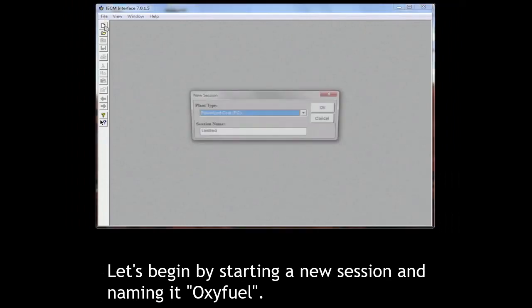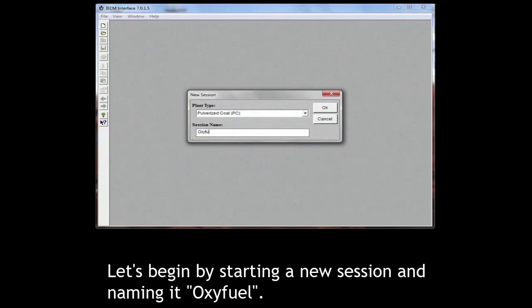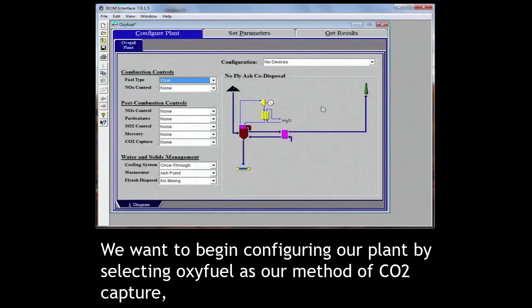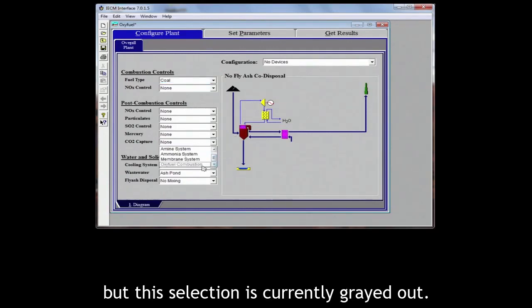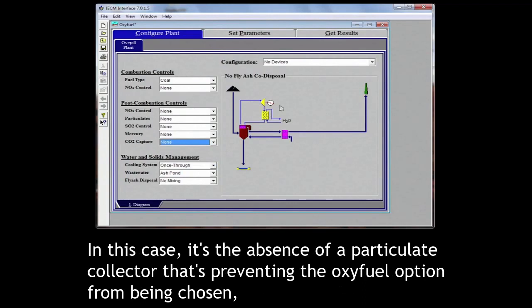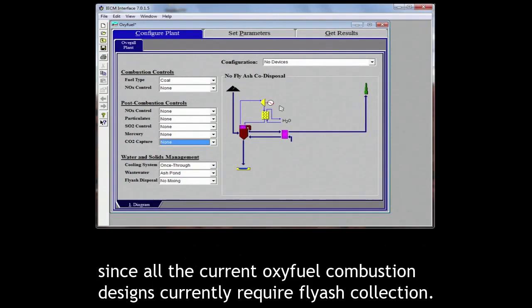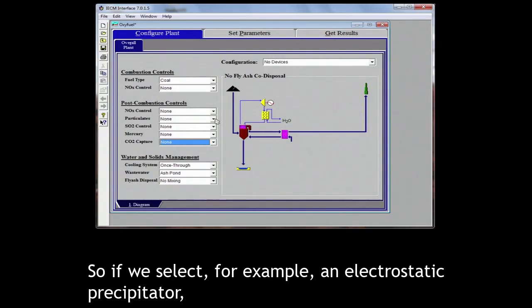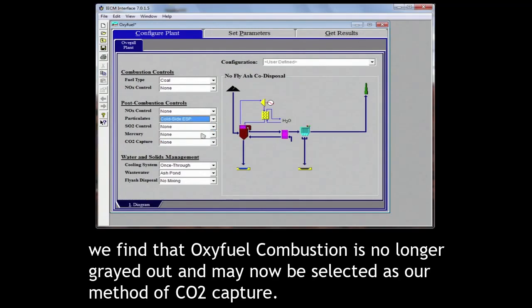Let's begin by starting a new session and naming it oxyfuel. We want to begin configuring our plant by selecting oxyfuel as our method of CO2 capture, but this selection is currently grayed out. This means that there are some other design choices which must be made in order to have this option available. In this case, it's the absence of a particulate collector that's preventing the oxyfuel option from being chosen, since all current oxyfuel combustion designs require fly ash collection. So if we select, for example, an electrostatic precipitator, we find that oxyfuel combustion is no longer grayed out and may now be selected as our method of CO2 capture.